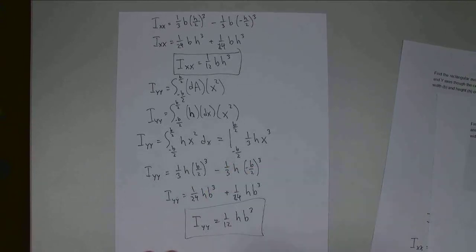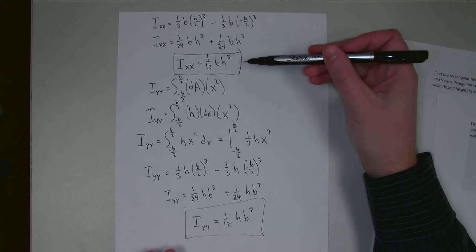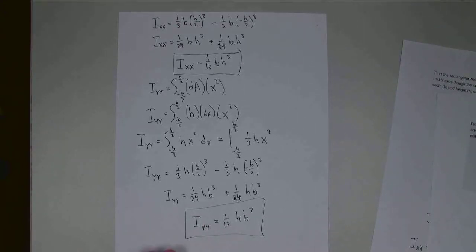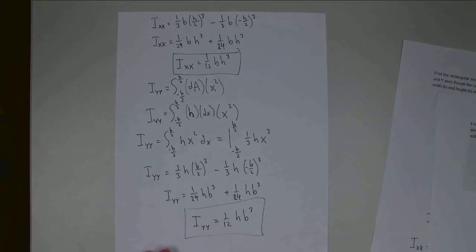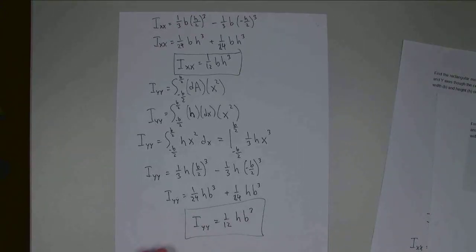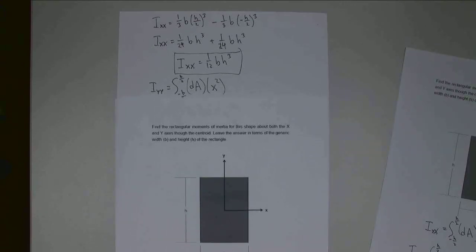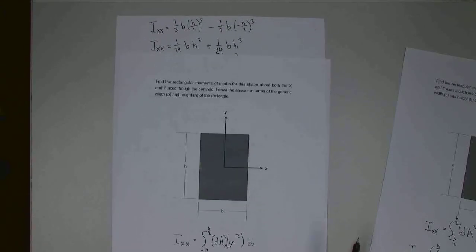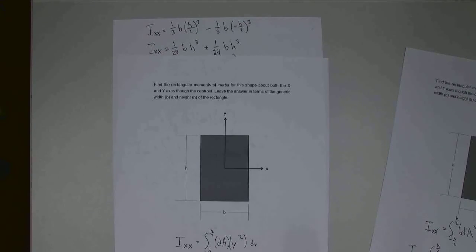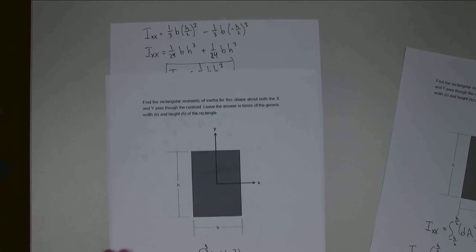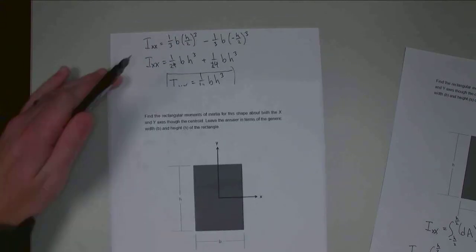This looks very similar to what I had for I-XX, except H and B have been switched. So with that, I've figured out the rectangular area moment of inertia for a generic rectangle with base B and height H about both the X and the Y axis. Thank you for watching, and I hope to see you again.